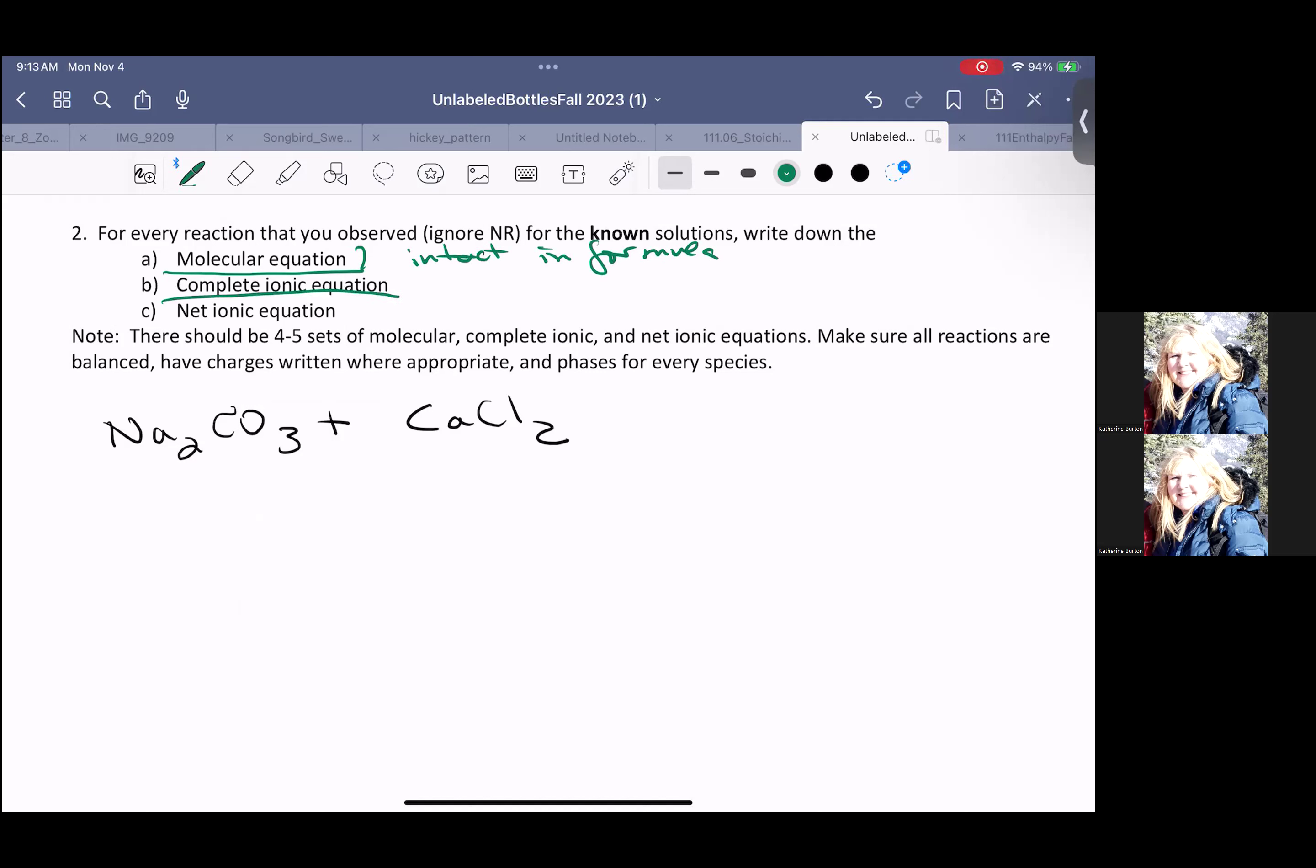When we write the complete ionic, we're going to take anything that's aqueous. And remember, this is all ionic. So if we put aqueous in an ionic compound, that means it's inherently soluble, and we're going to break into ions.